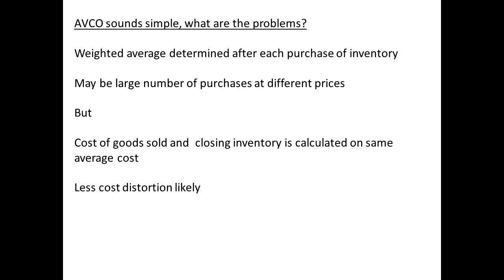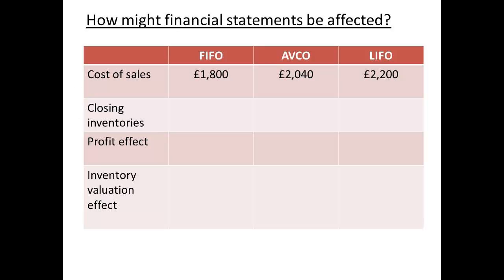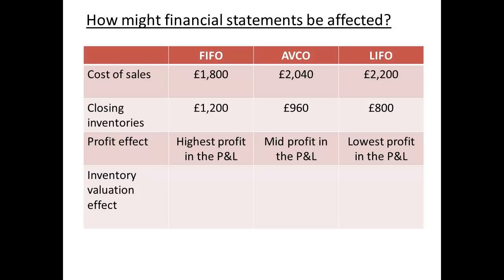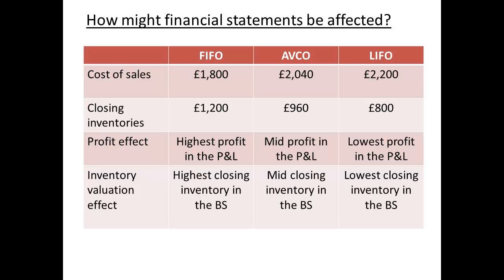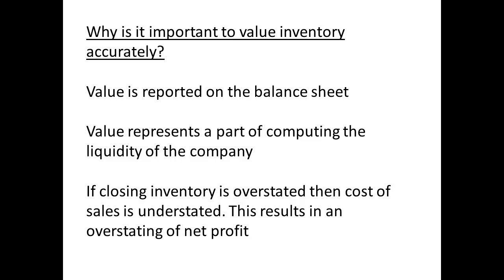AVCO determines the weighted average after each purchase of inventory. This becomes cumbersome when there are a large number of purchases at different prices. However, cost of goods sold and closing inventory are determined using the same average cost, so there is less cost distortion. For cost of sales, FIFO gives the lowest cost and LIFO the highest. This means closing inventory will be highest in FIFO and lowest in LIFO. The lower the cost of sales the higher the gross profit, so FIFO gives the highest gross profit and LIFO the lowest. FIFO will have the highest values for inventory on the balance sheet and LIFO the lowest. We can use the different methods of valuation and see what effect they have on the balance sheet and the income statement.